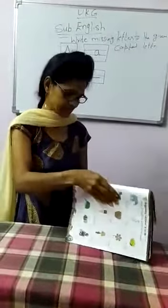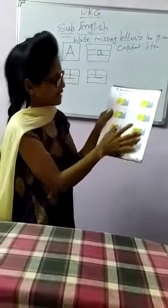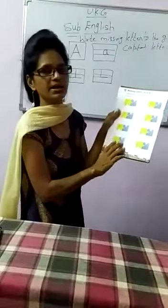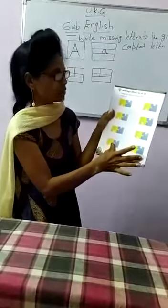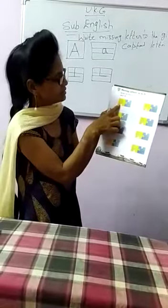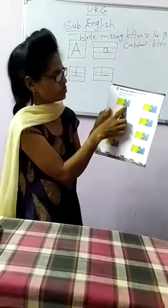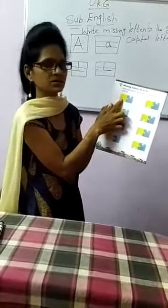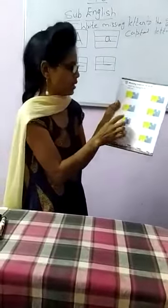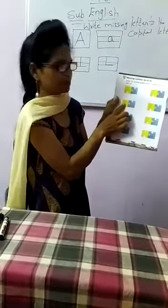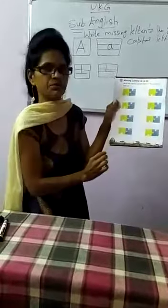Now turn to page number 6. Here again — missing letters S till Z. In the same way how we learned A, B, C, D and all the missing letters, here also you have to write in the same pattern. See — in the first one, it's blank, and beside it in the blue box they gave small s. So which letter you have to write? Capital S. And here, see capital U — so you have to write small u. Like that, you have to finish it up.